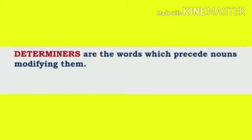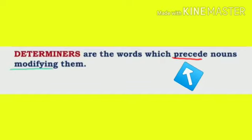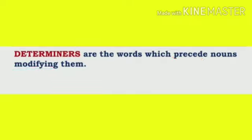First of all, we will see the definition of determiners. Determiners are the words that precede nouns, modifying them. To understand this definition well, we will make two parts. The first part is: determiners are the words that precede nouns — by precede, it means they come before a noun. The second part is modifying them, which means the determiner gives meaning to the noun.